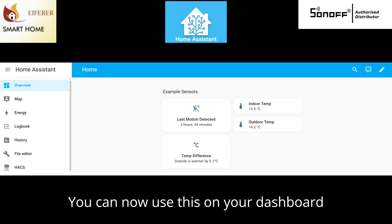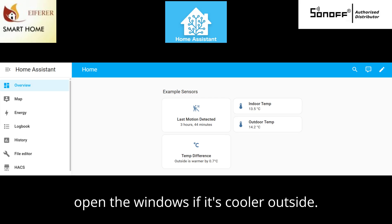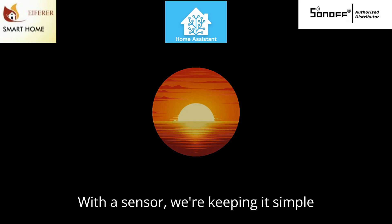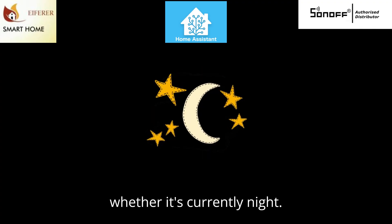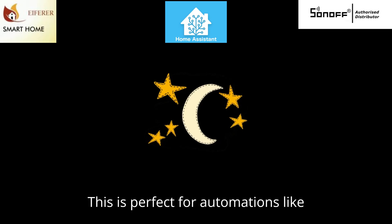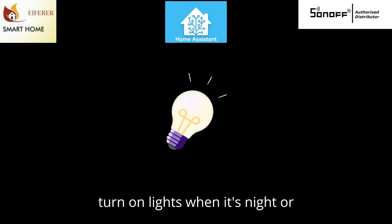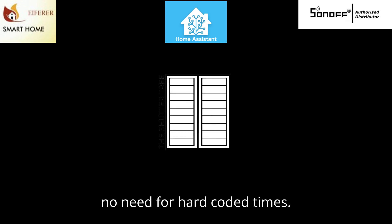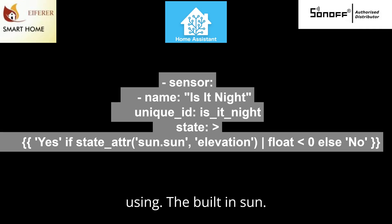You can now use this on your dashboard or in automations like 'open the windows if it's cooler outside.' With the next sensor we're keeping it simple — a yes/no sensor that tells you whether it's currently night. This is perfect for automations like 'turn on lights when it's night' or 'close blinds after sunset.' No need for hardcoded times — the sensor checks the sun's elevation using the built-in sun.sun entity.